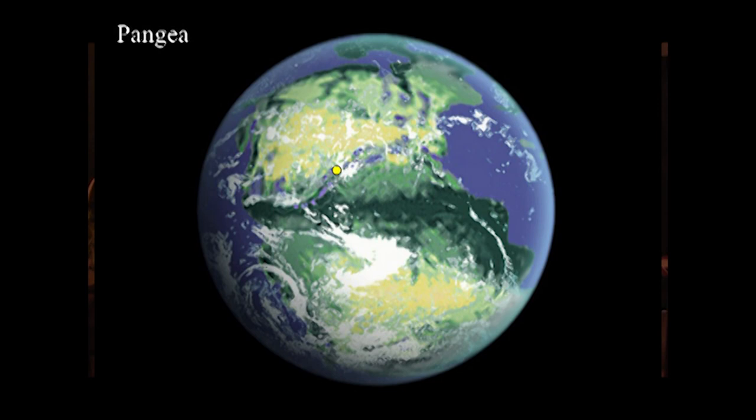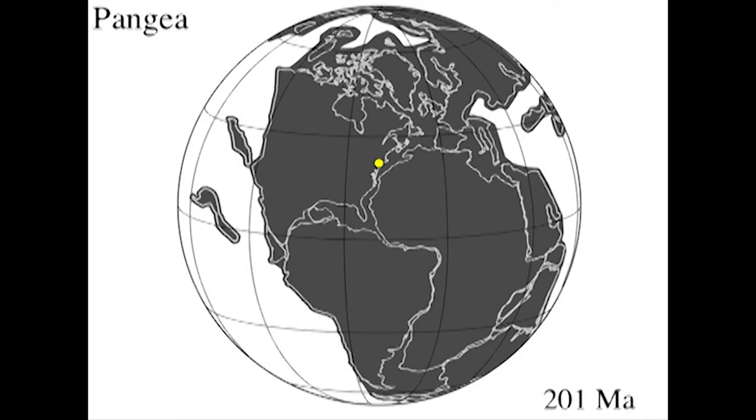The equator was right down here, about 20 degrees north latitude. It was a completely different environment than it is now, right in the middle of the supercontinent, with one continent and one giant ocean. And if we look at it with the outlines of the continents today upon the supercontinent of Pangaea, we're located right there.